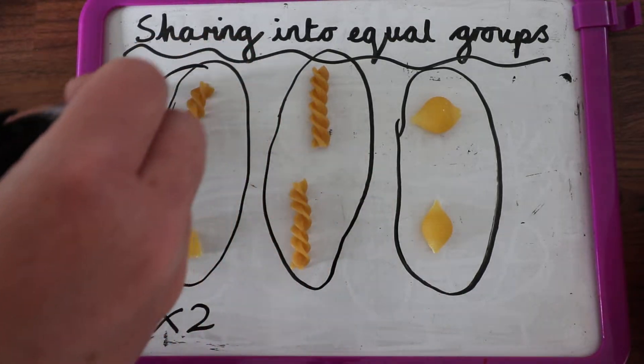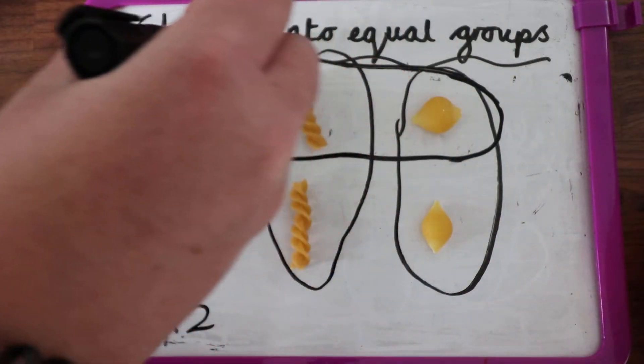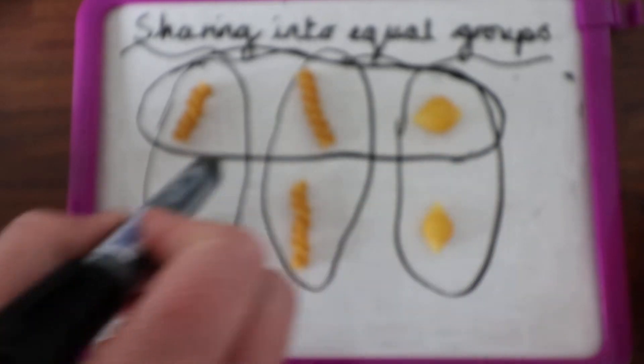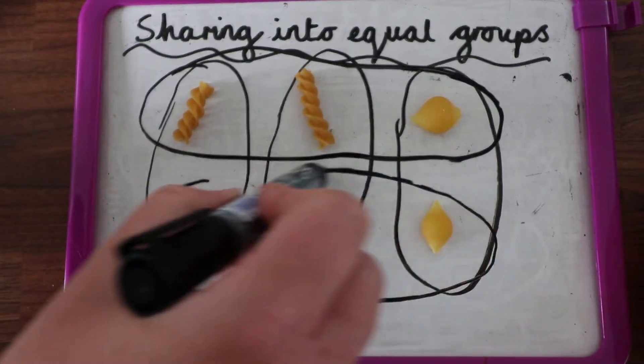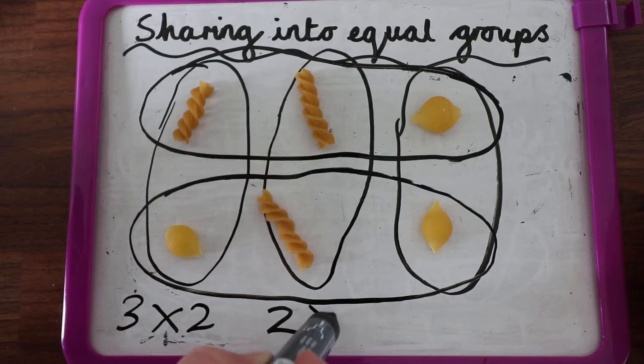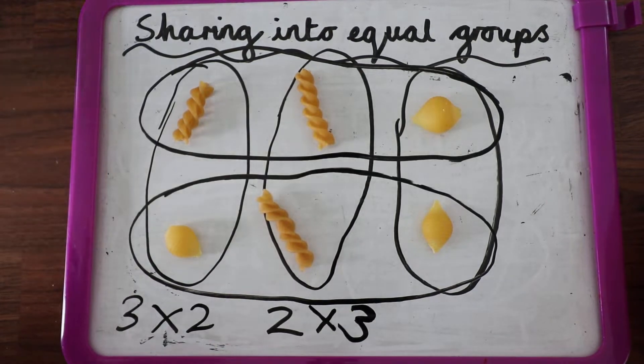And if I did it the other way, in a line, I've got one group of three, two groups of three. Because three groups of two and two groups of three are the same.